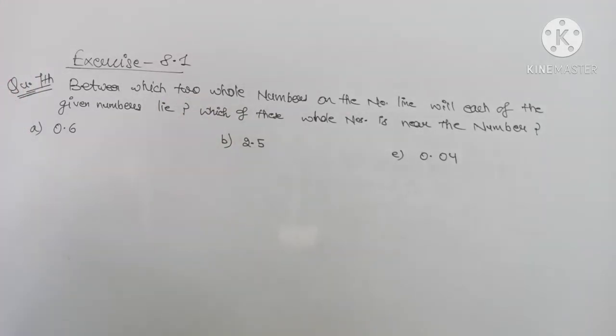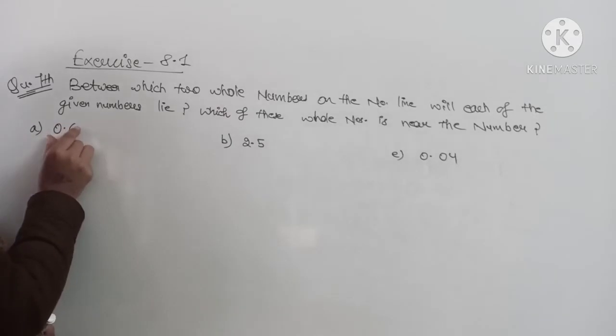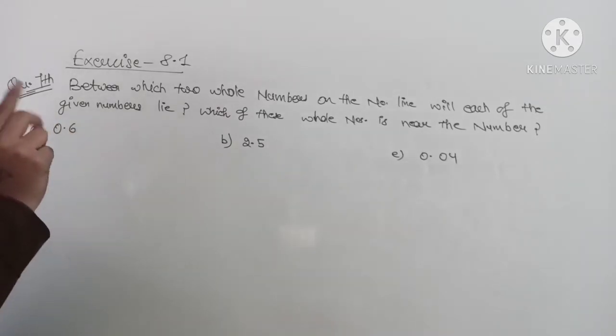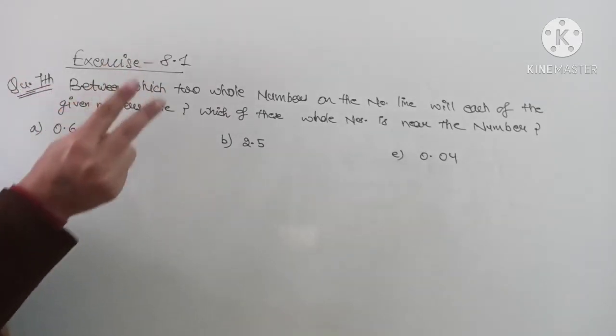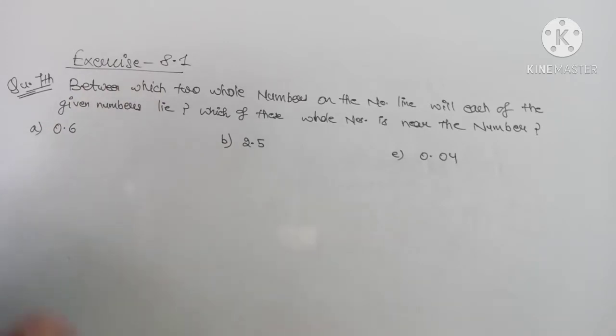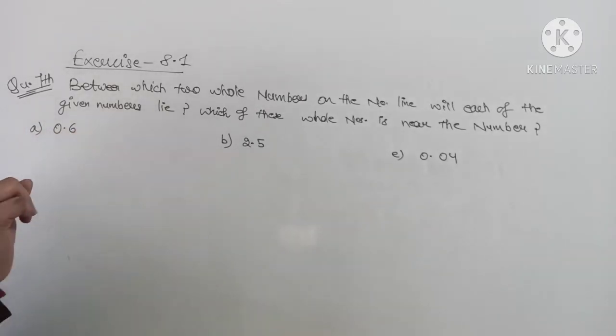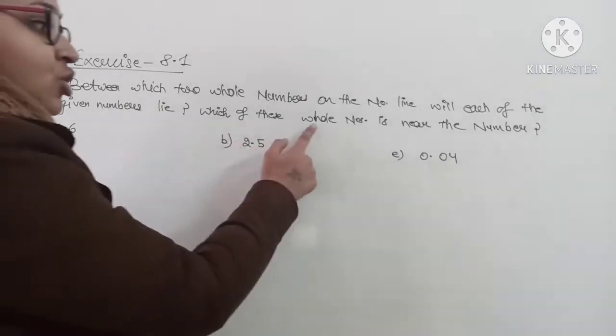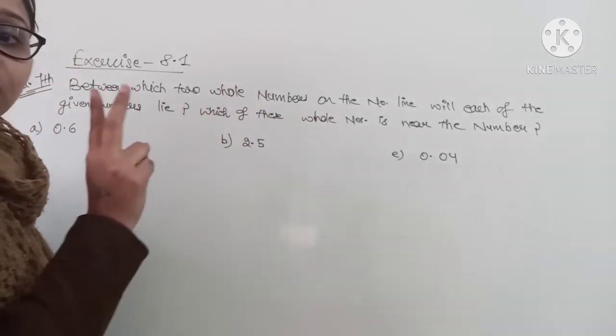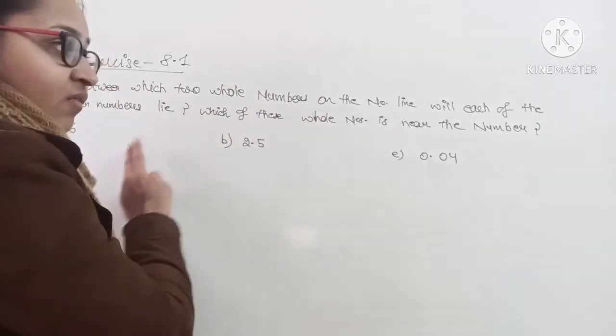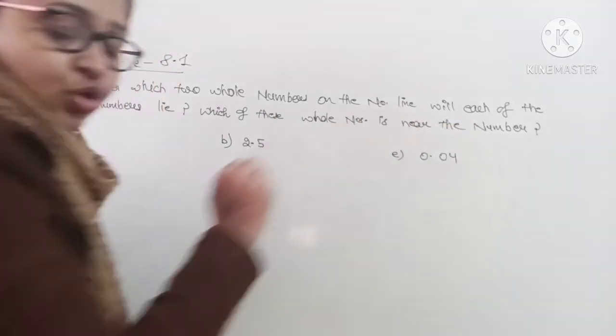It means first of all we have to tell this given decimal number lies between which two whole numbers. Whole numbers are starting from 0, 1, 2, 3, 4. So we have to tell 0.6 lies between two whole numbers, which whole numbers. And after that, out of those two whole numbers, the given number is near which whole number.